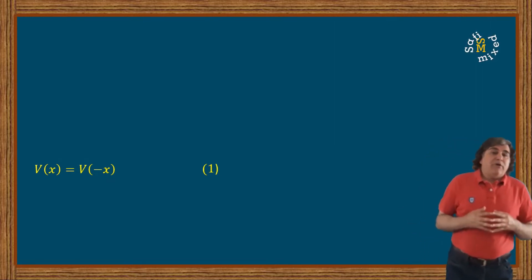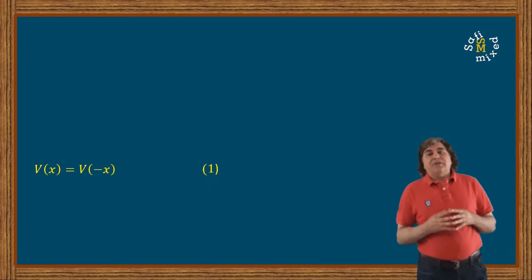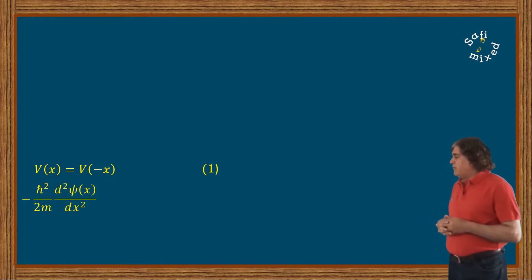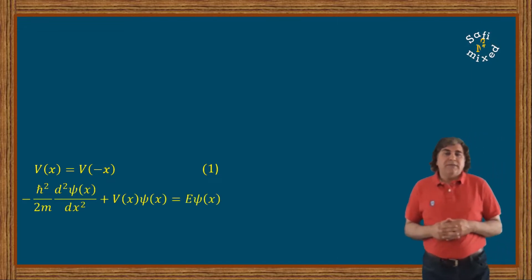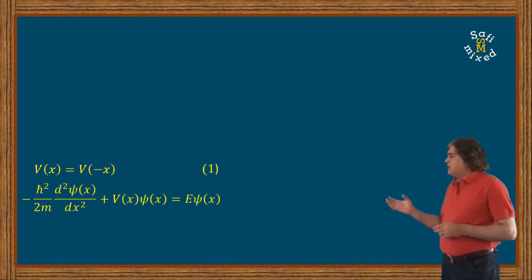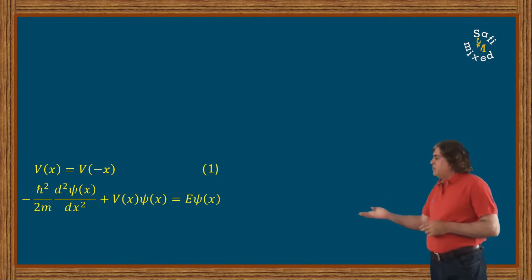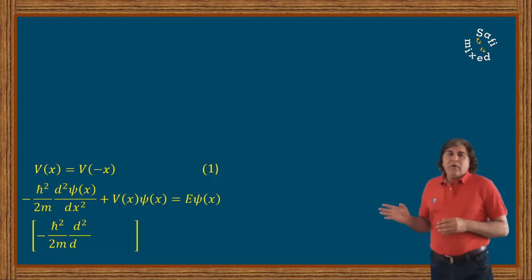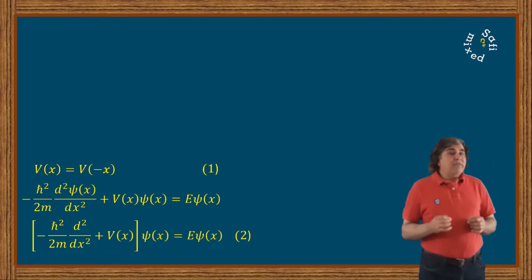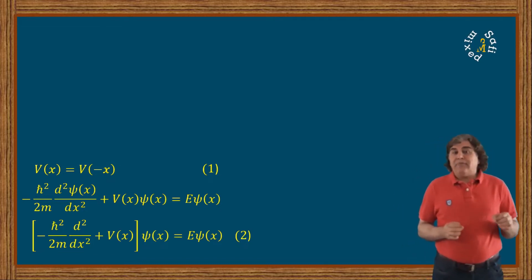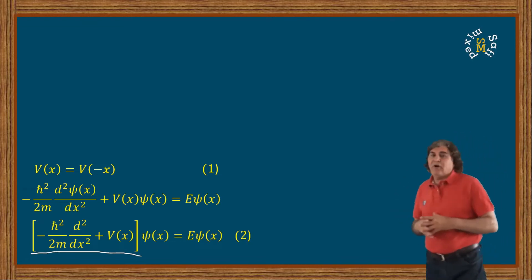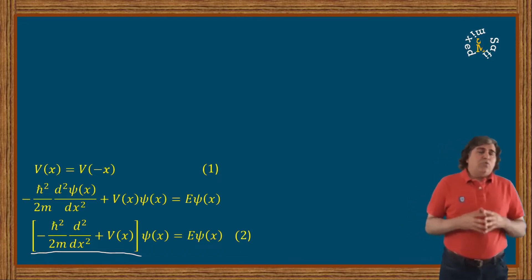The Schrödinger wave equation for the particle under such a potential takes a specific form. Rewriting the Schrödinger wave equation with potential V(x) and factoring out the wave function from the two terms on the left, I can rewrite the wave equation into a compact form. This equation is an eigenvalue equation with ψ(x) as the eigenfunction and E as the eigenvalue of the operator inside the square brackets.